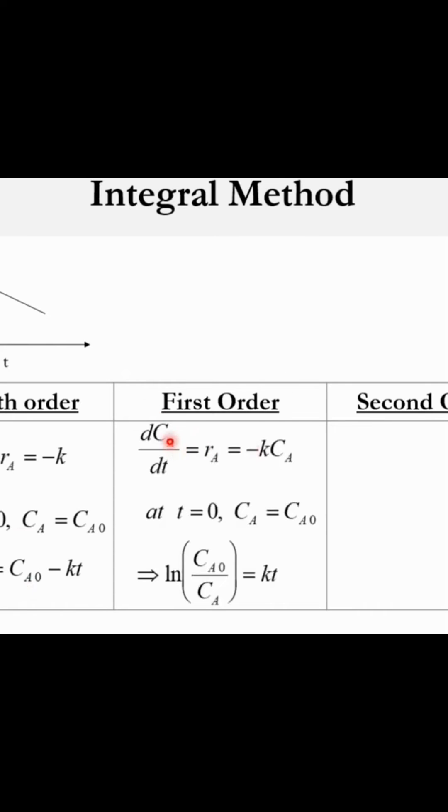For first order, dCa/dt = Ra = -kCa. At t=0, Ca=Ca0, and at t=t, Ca=Ca. Once we integrate, we get ln(Ca0/Ca) = kt. Here y is ln(Ca0/Ca), x is t, and the slope is k.